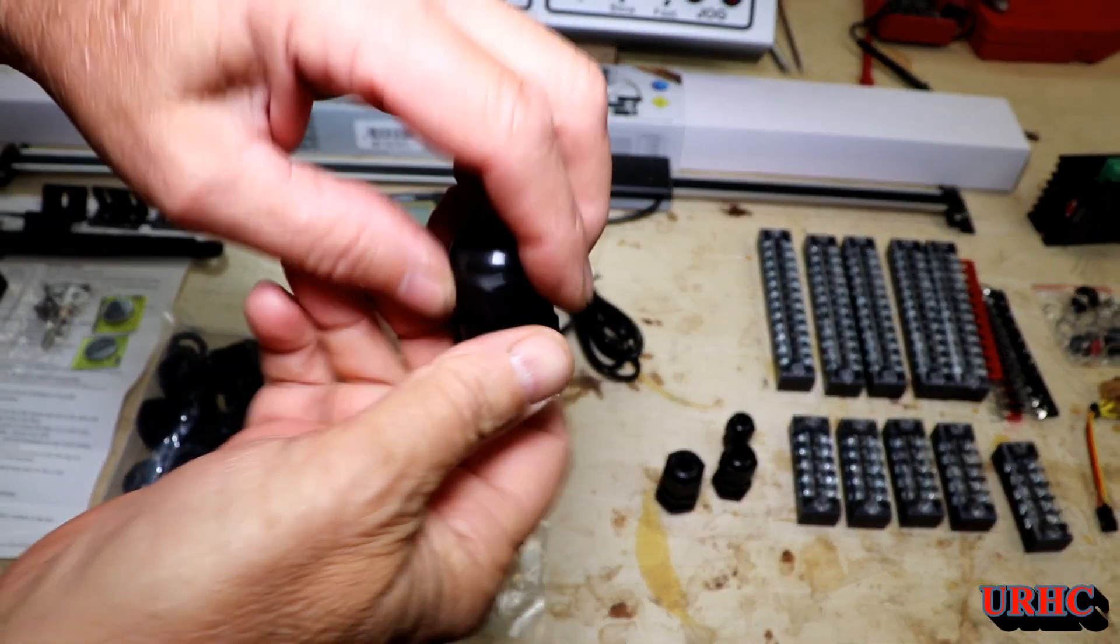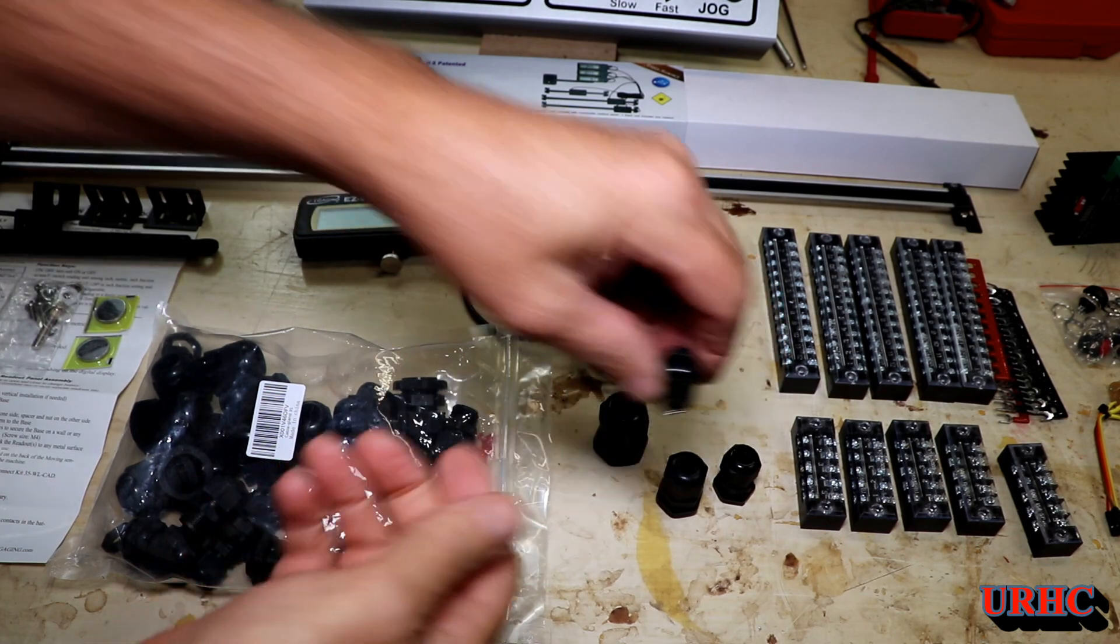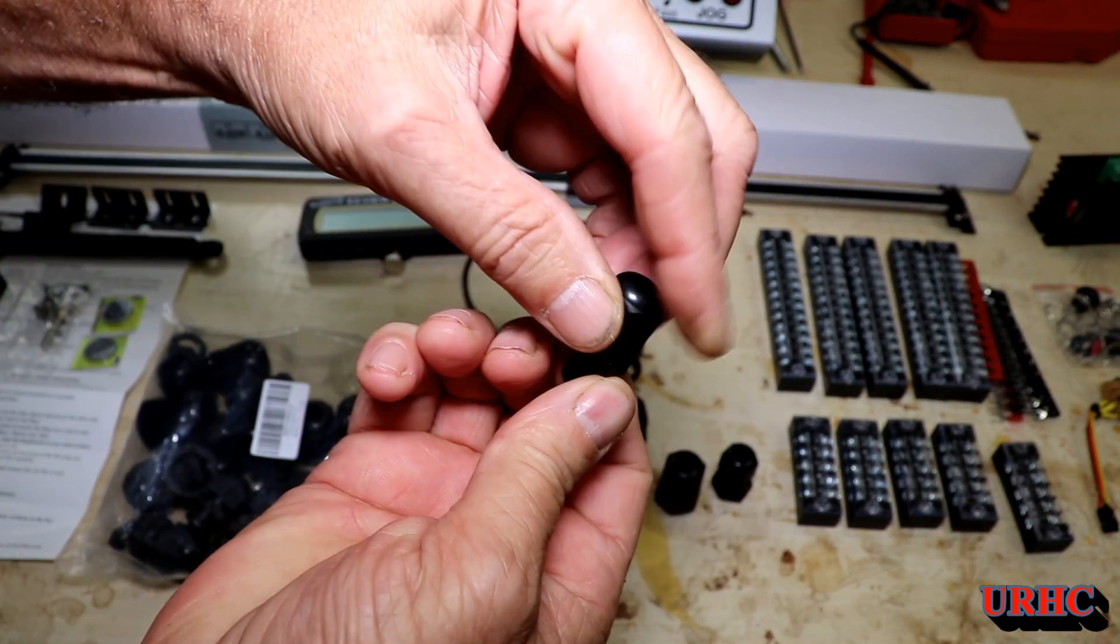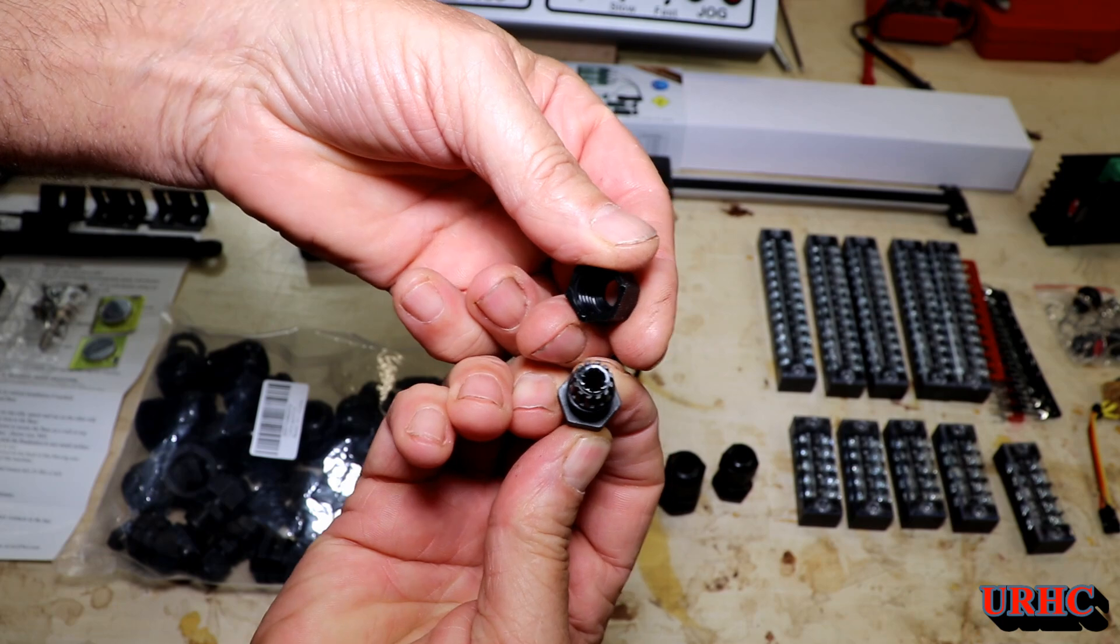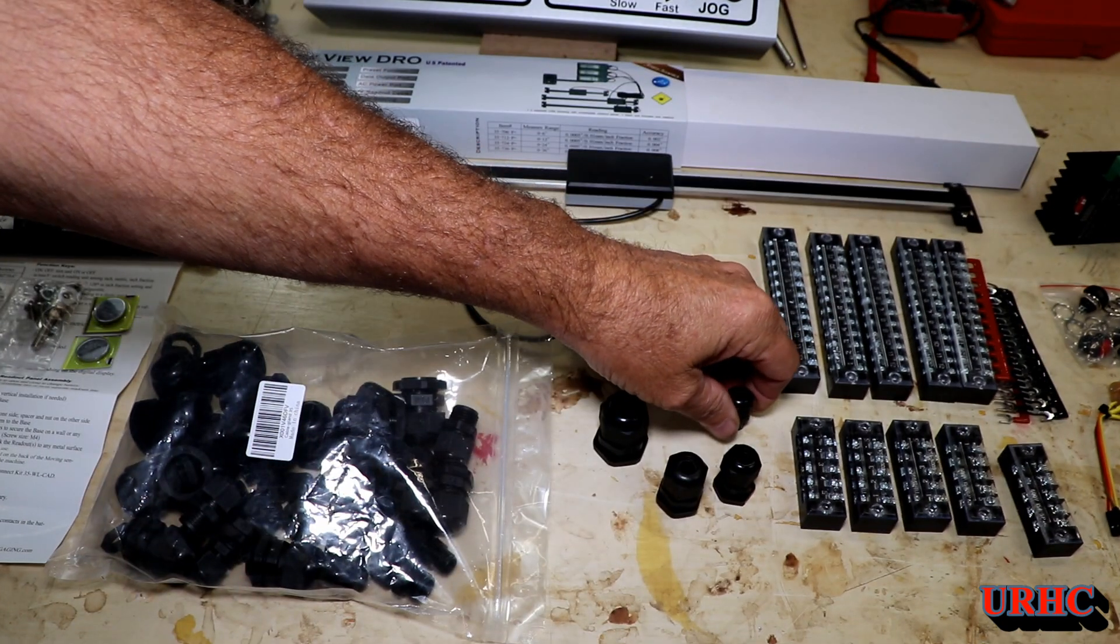And then I had some bag of these strain reliefs I had gotten for another project, and I'm going to be using them just to make everything dust proof where the cables come in and go out of the boxes. It'll help keep the sawdust out I hope.